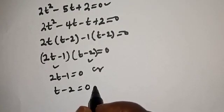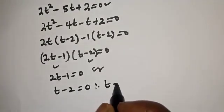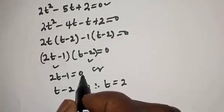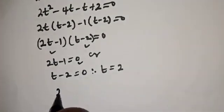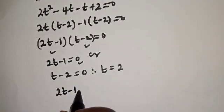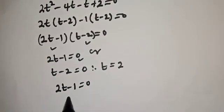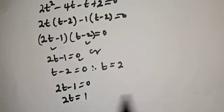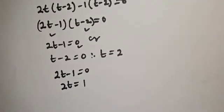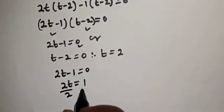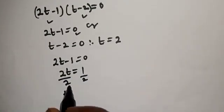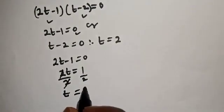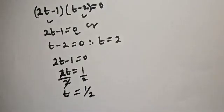From the second case, t is equal to 2. From the first case, 2t minus 1 equals 0, so 2t equals 1, and dividing both sides by 2, t is equal to 1 over 2.